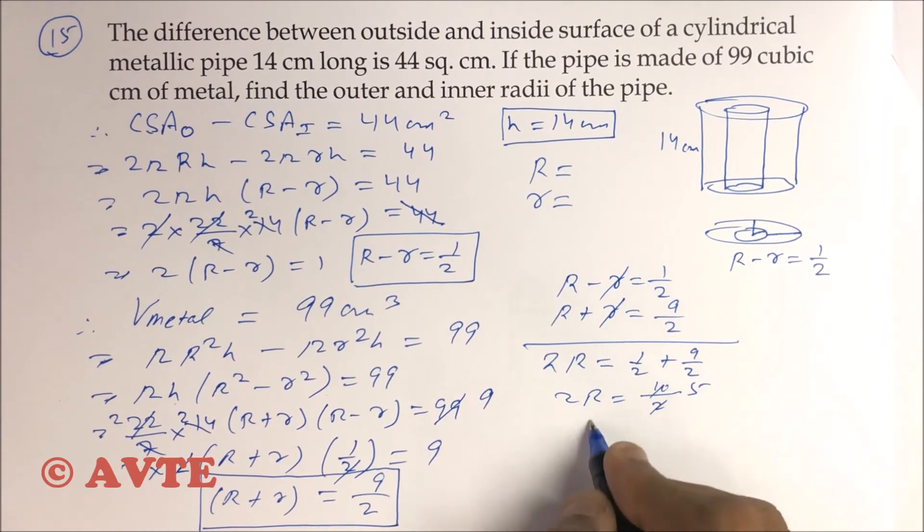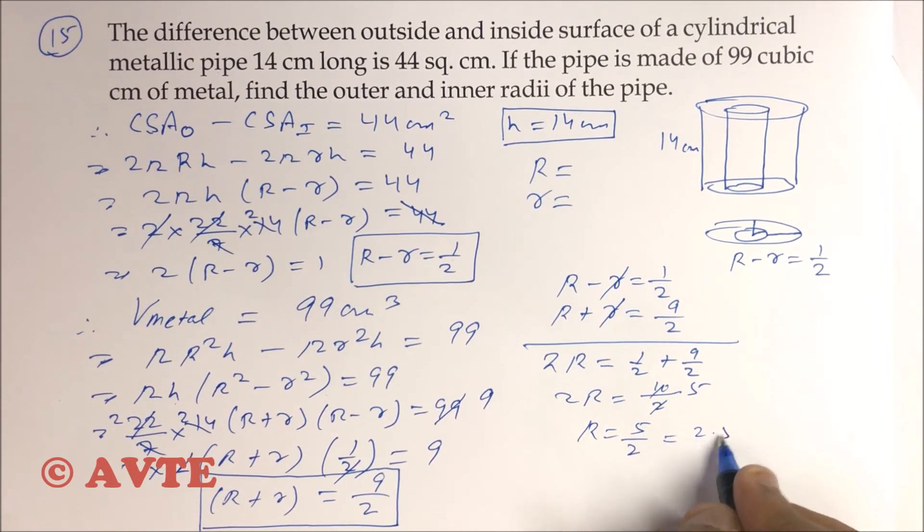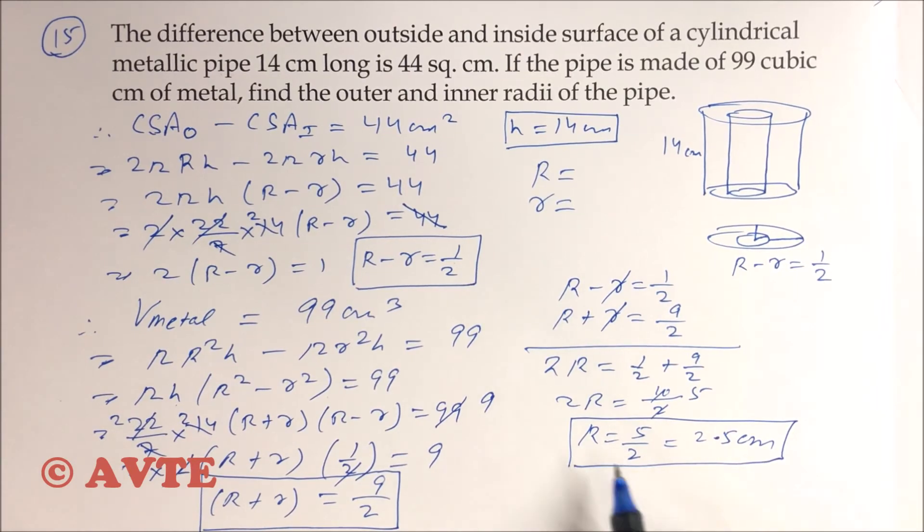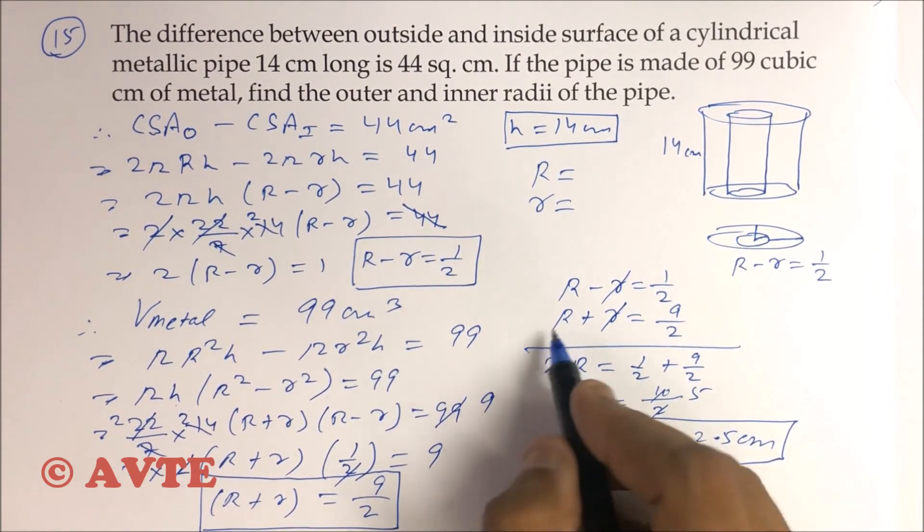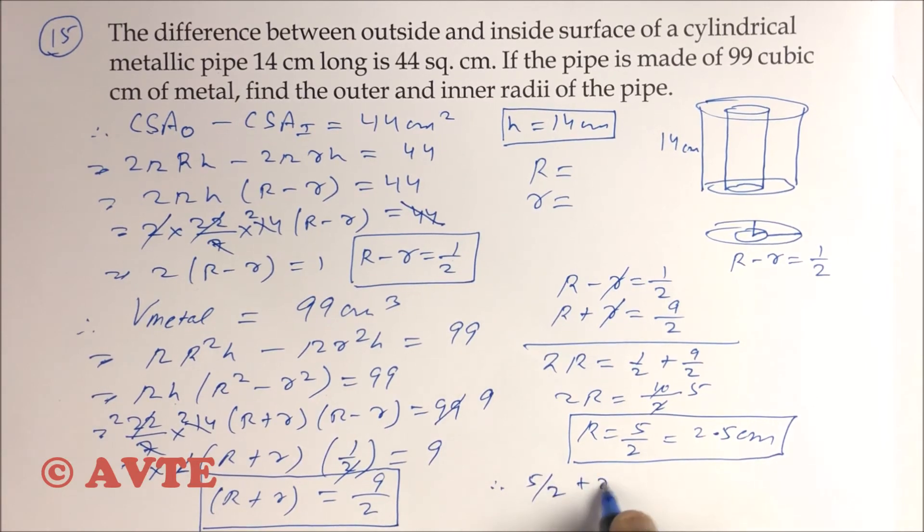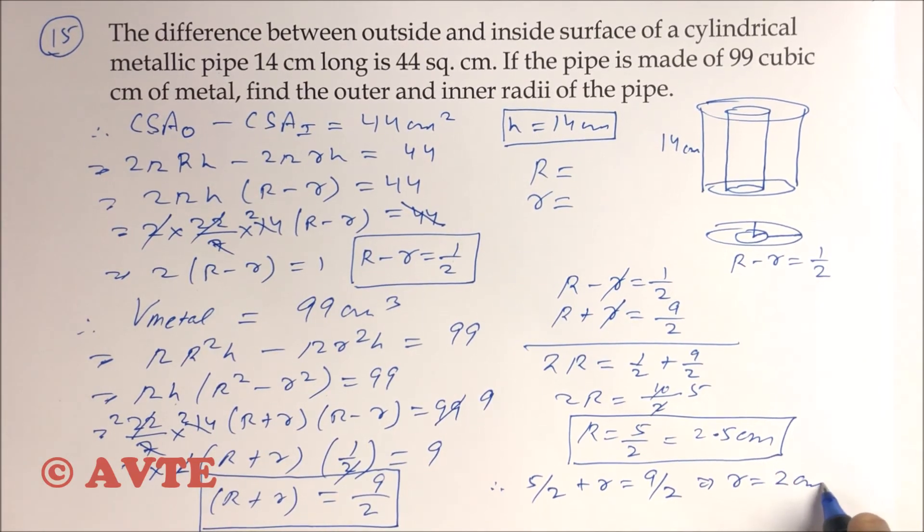That means big R is 5/2, that is 2.5 centimeter. And if you replace the value of 5/2 in this equation, 5/2 + r = 9/2, that means r is 9/2 minus 5/2, which is 4/2, that is 2.